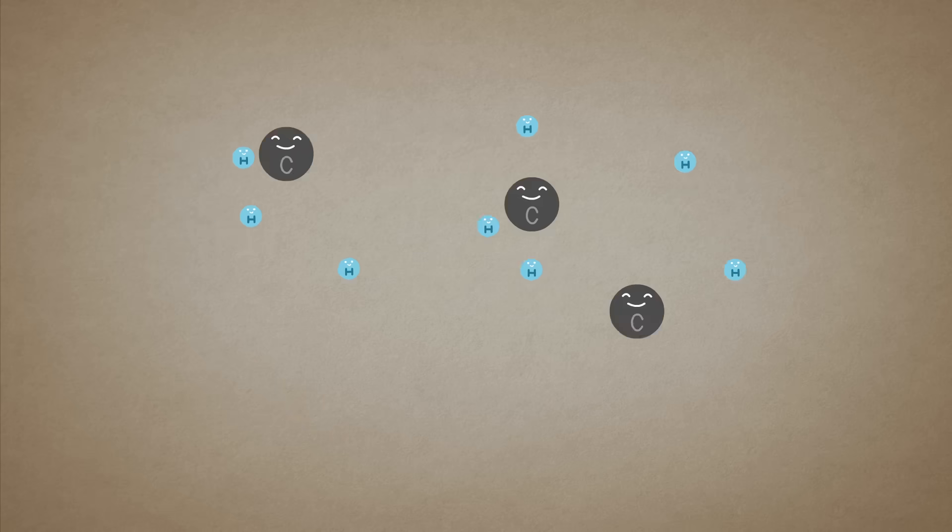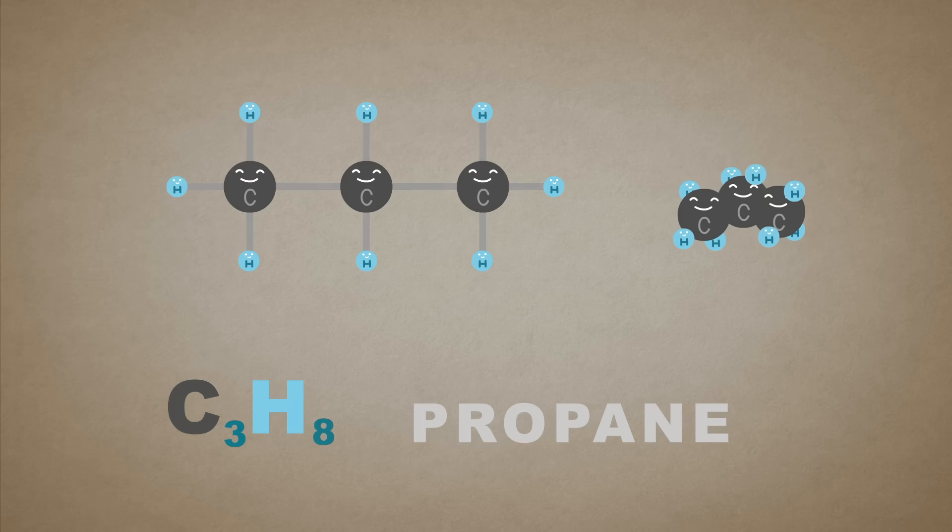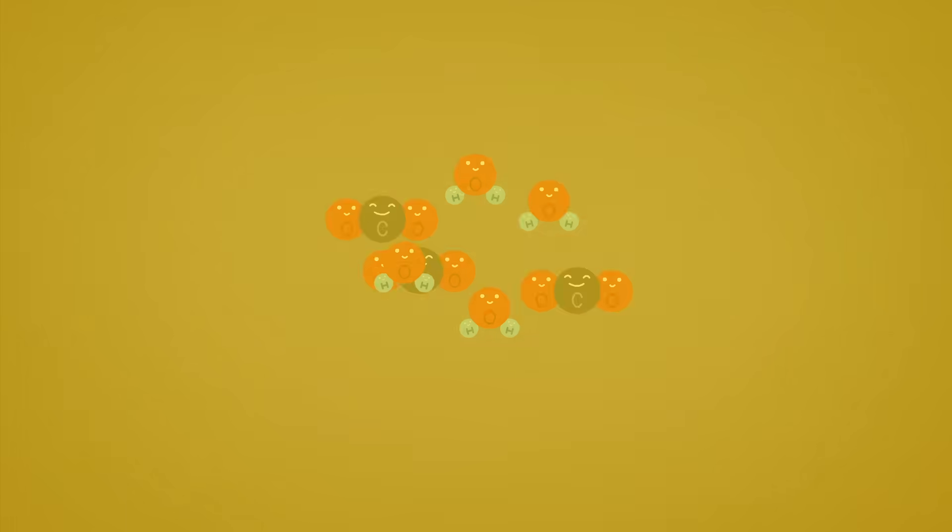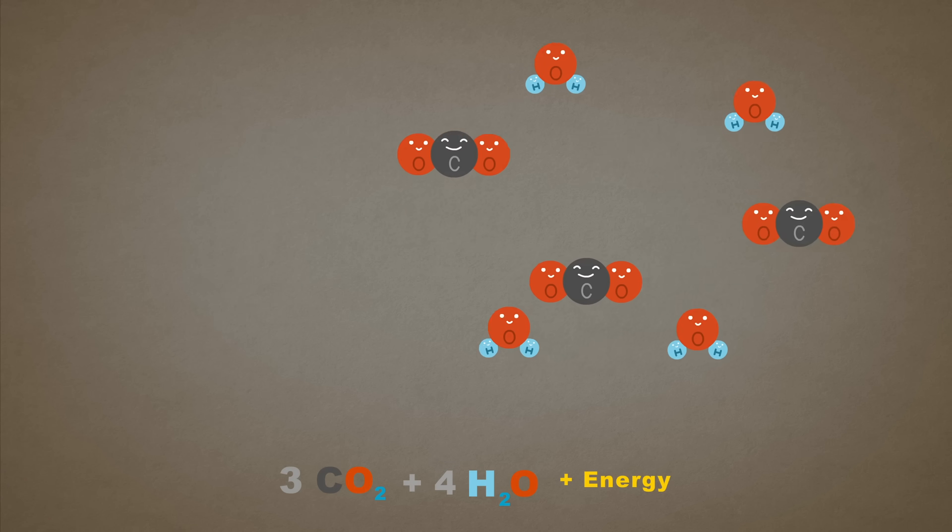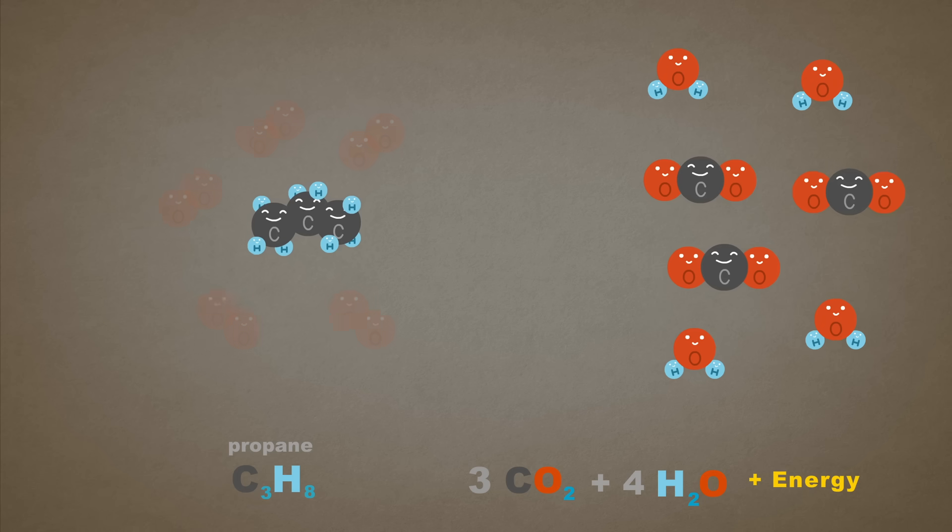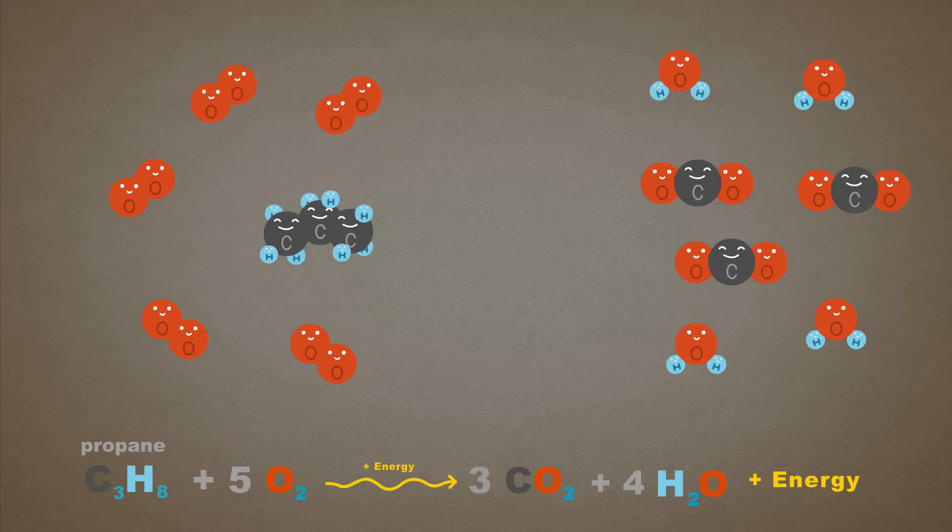For a grand finale, here's propane, another combustible gas. We add oxygen, light it up, and boom, more water and carbon dioxide. This time we get three CO2s, because the propane molecule started with three carbon atoms, and they have nowhere else to go.